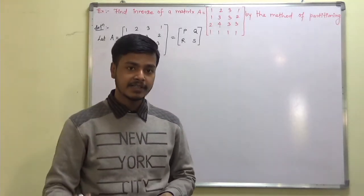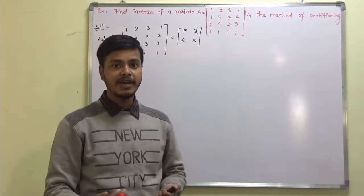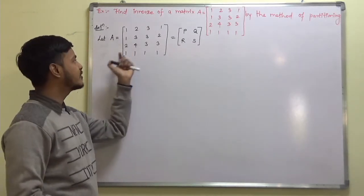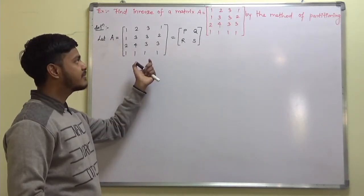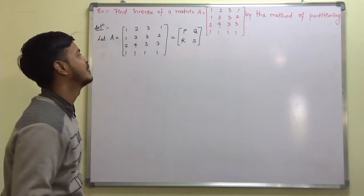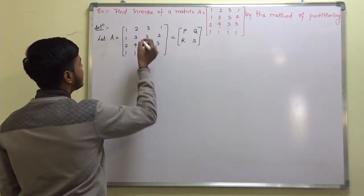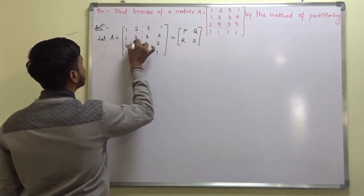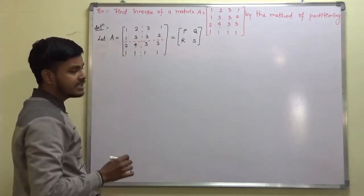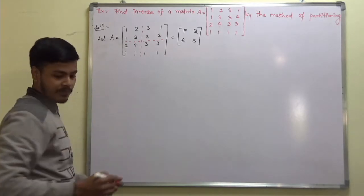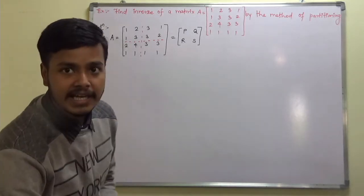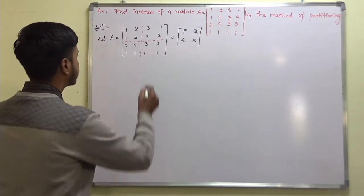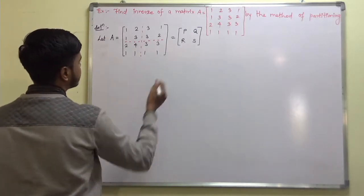To save some time, I have already written matrix A, and as we are going to partition this matrix, I have written P, Q, R and S. So you can just partition like this.